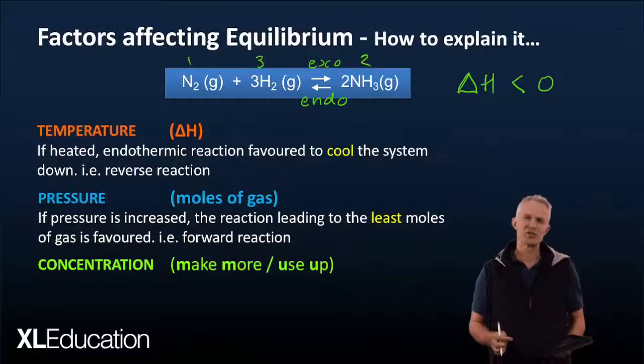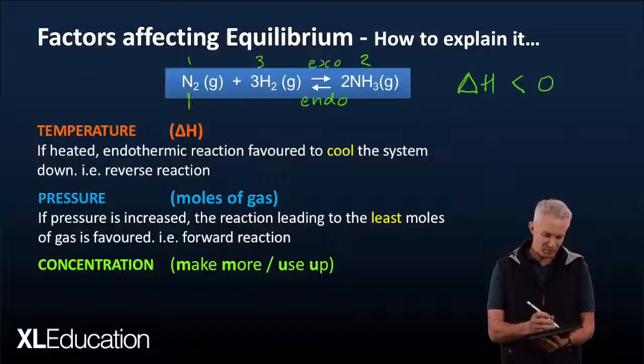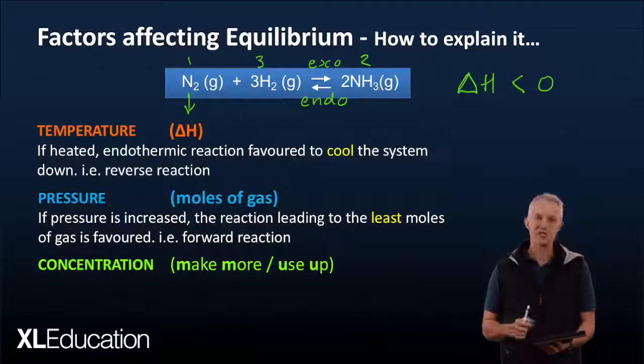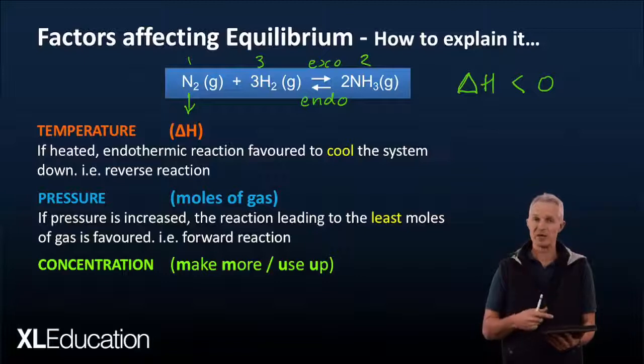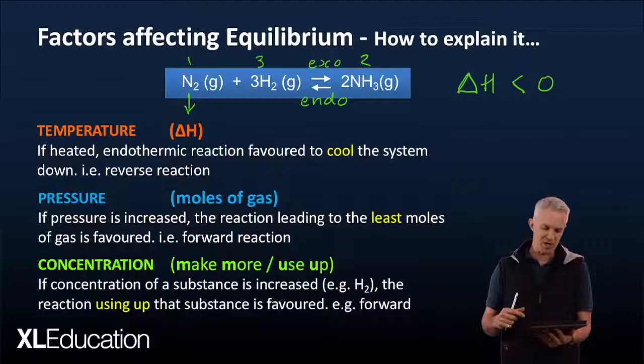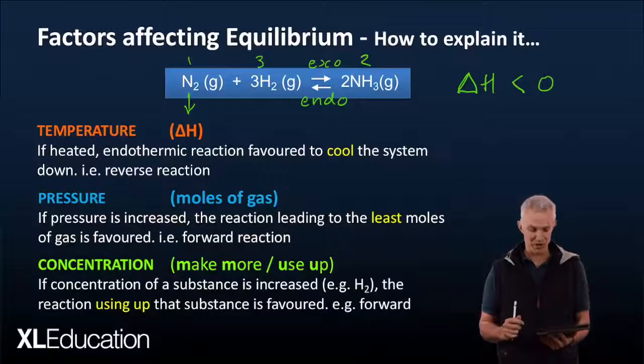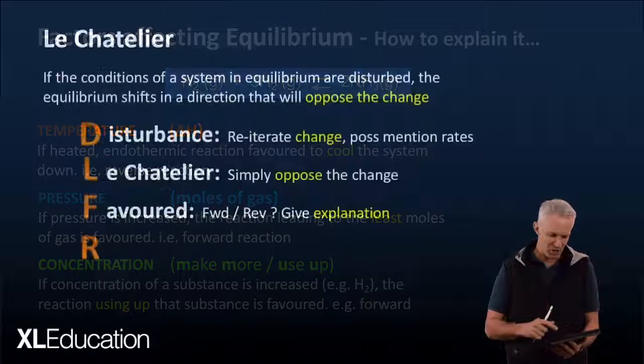And then the last change, if there's a change in concentration, well if something is depleted, let's say for example we removed some nitrogen, well then it's going to try and make more. How does it make more? Well it's going to favour the reverse reaction and vice versa. Alright, so that gives you an idea of the three possible changes we might have and how the reaction will respond. Once you've done a couple of examples it'll start to make more and more sense. Okay let's keep moving on.